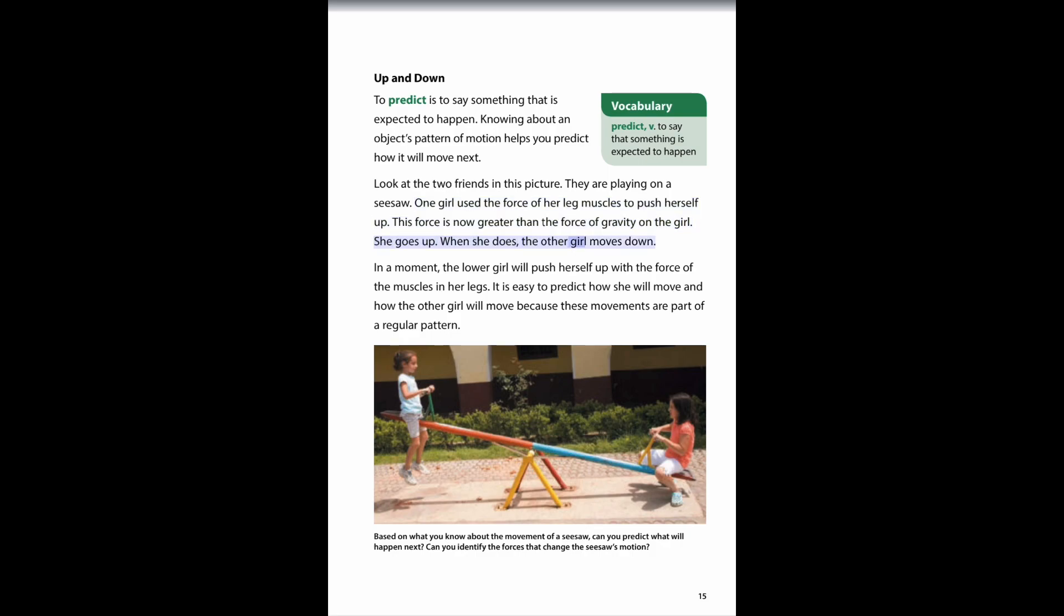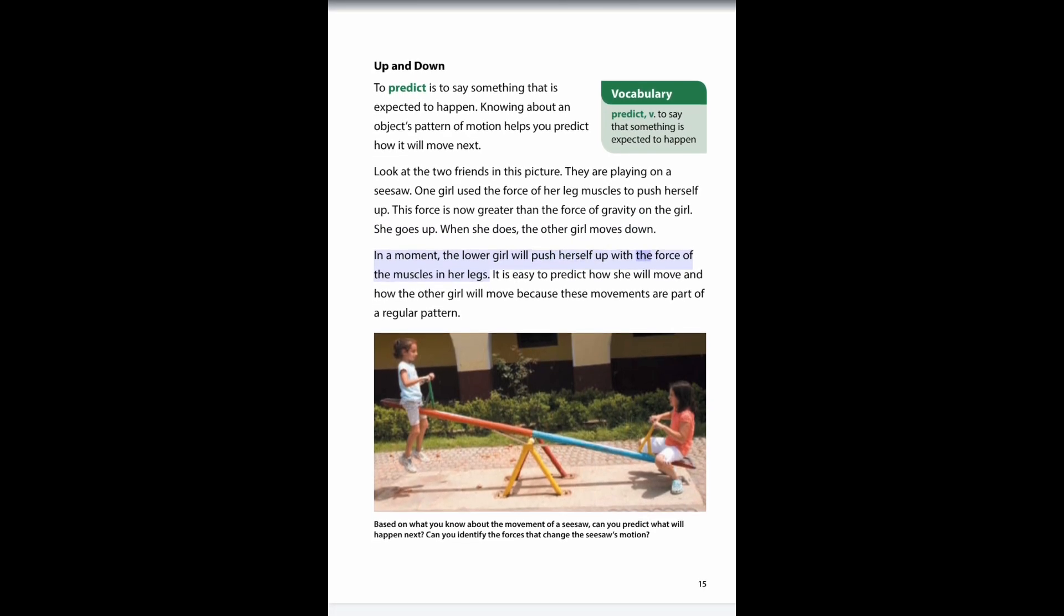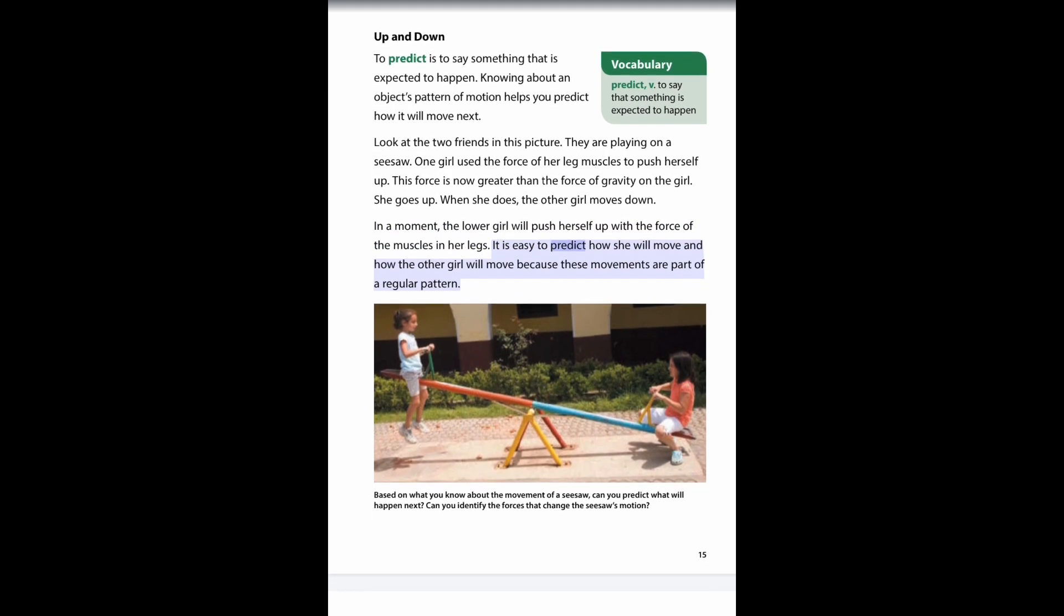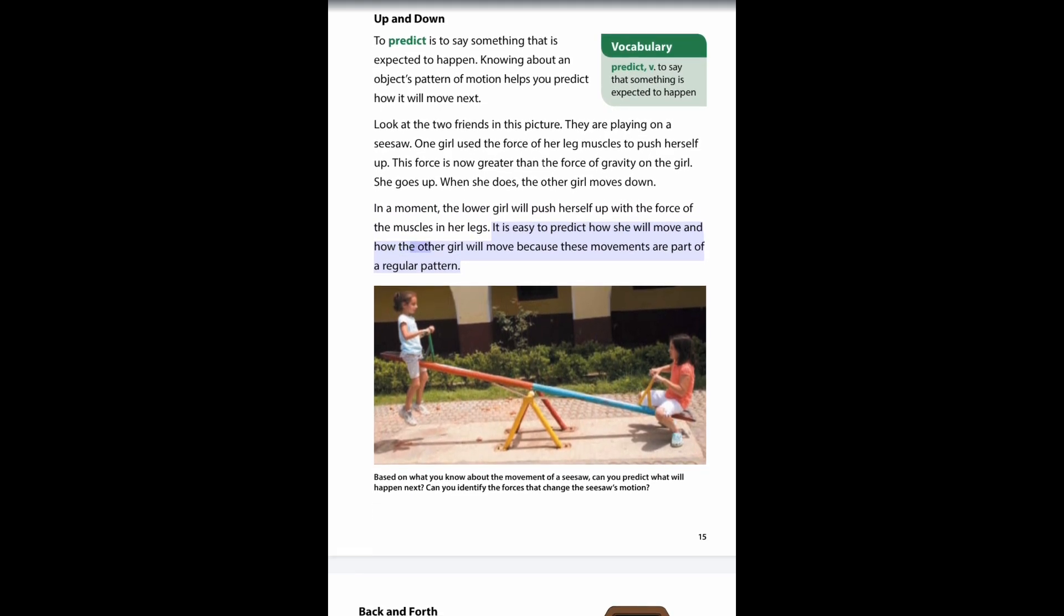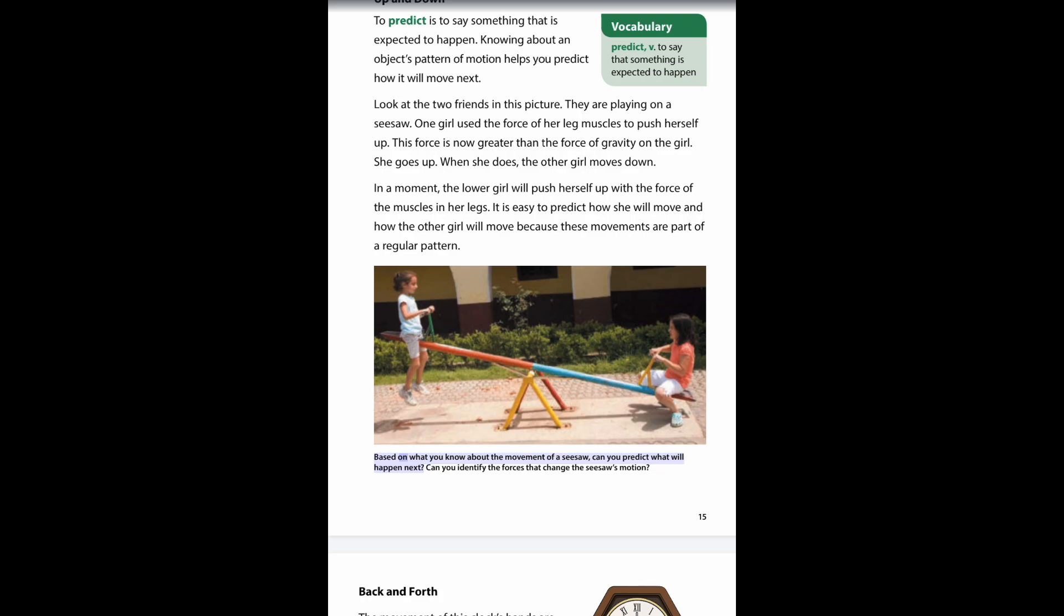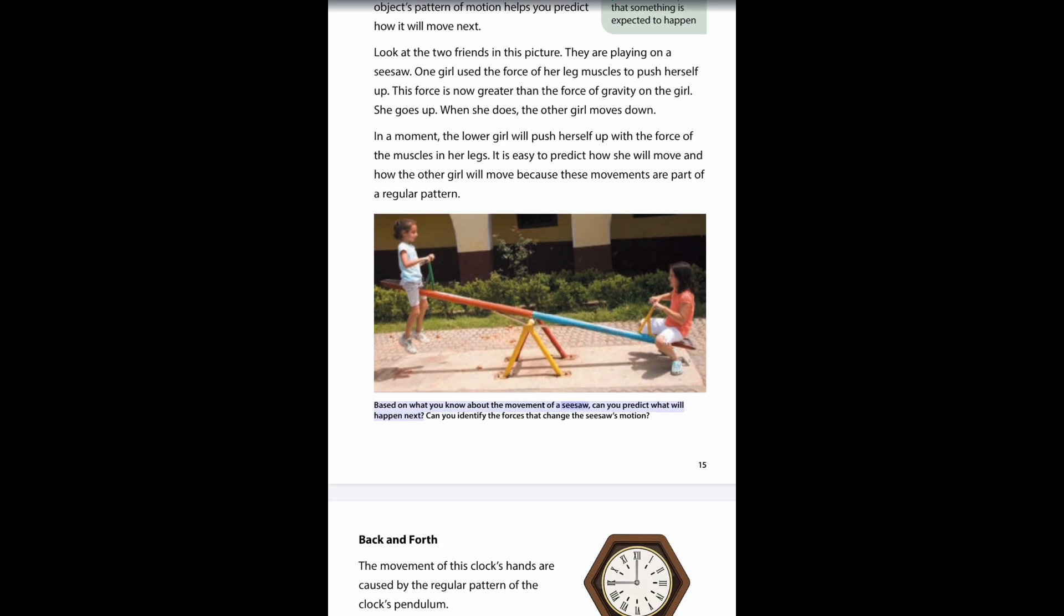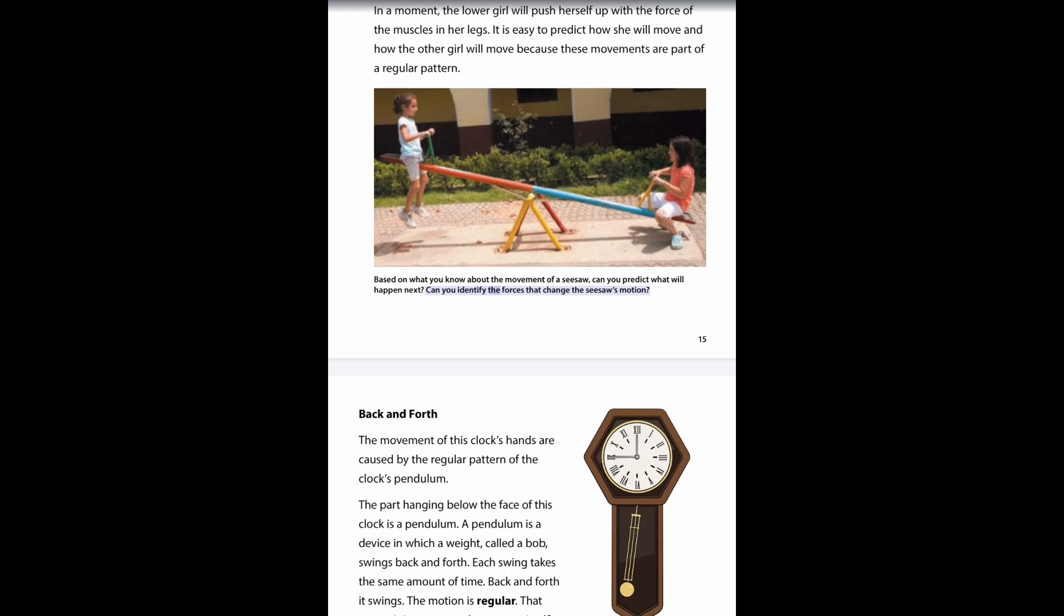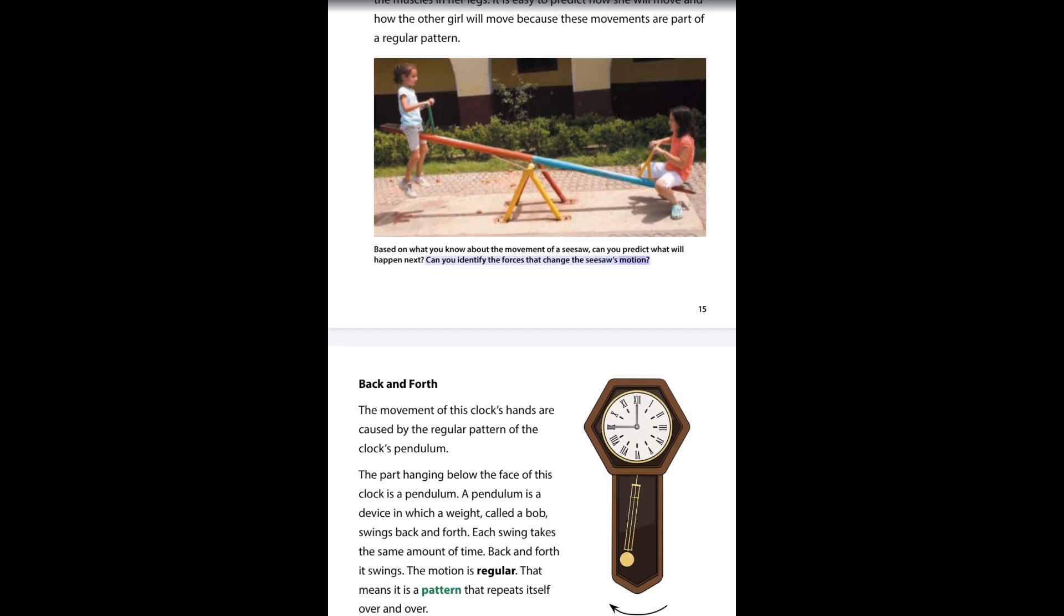When she does, the other girl moves down. In a moment, the lower girl will push herself up with the force of the muscles in her legs. It is easy to predict how she will move and how the other girl will move because these movements are part of a regular pattern. Based on what you know about the movement of a seesaw, can you predict what will happen next? Can you identify the forces that change the seesaw's motion?